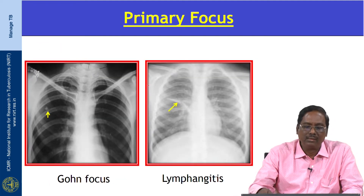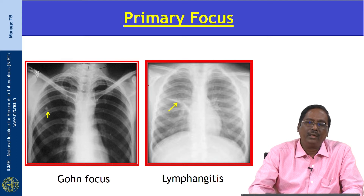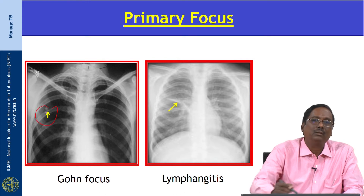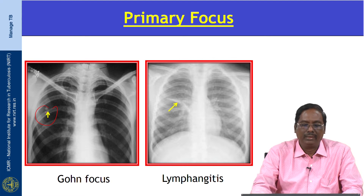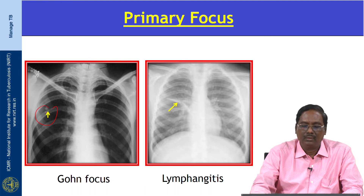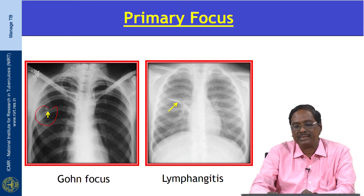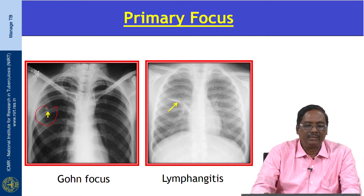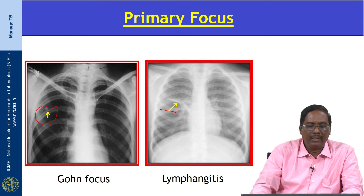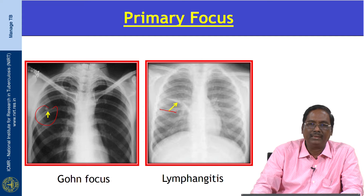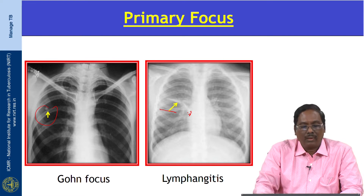The primary focus, or Ghon focus, is an area of consolidation or caseating granuloma that most commonly occurs in the lower part of the upper lobe or upper part of the lower lobe. With good immunity, Ghon's foci usually heal by calcification. On chest X-ray, the foci may be seen as a calcification — this is only a telltale evidence of past TB disease. Lymphangitis appears as a discrete linear opacity with erased contour and miliary nodules in a string of pearls aligned along the lymphatic vessels, representing tuberculous inflammation of the lymphatics linking the Ghon focus to the hilar lymph node.